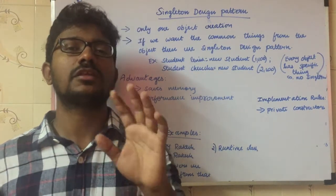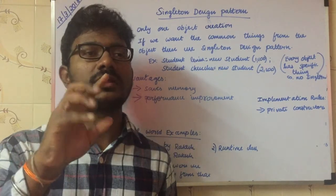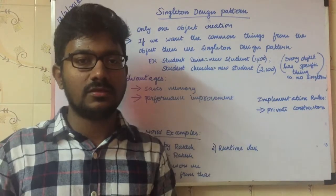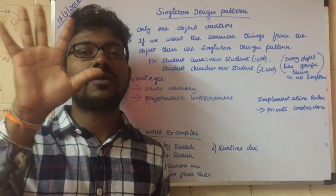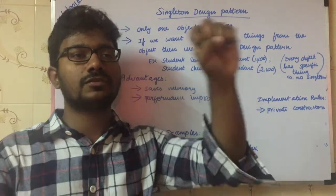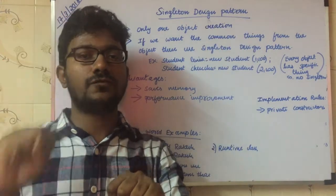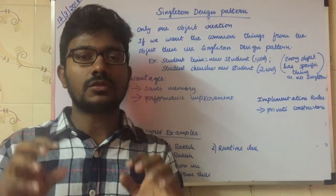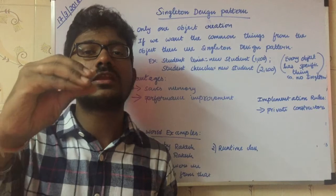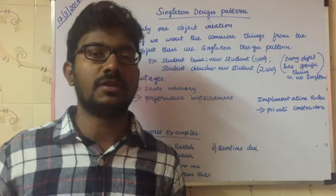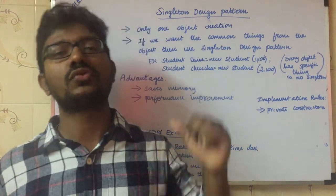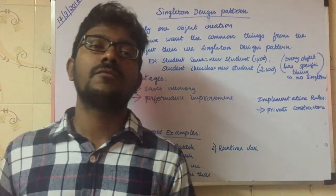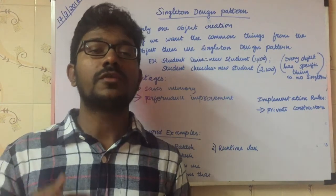Imagine a scenario where you try to create an object n number of times. For example, consider n equal to 5. In memory, if you want to create 5 objects — first, second, third, fourth, and fifth — those 5 objects consume a considerable amount of memory. That memory consumption can be avoided using Singleton.